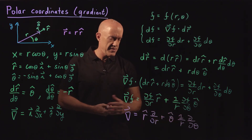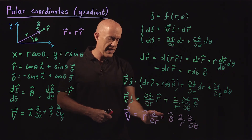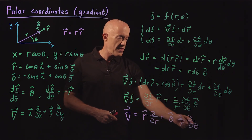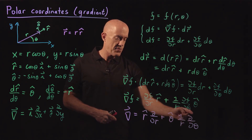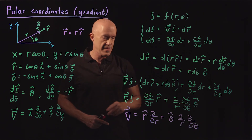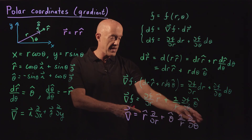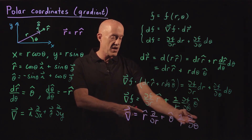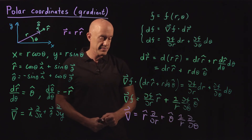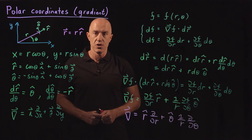I write it in this particular way, with r-hat and theta-hat placed in front, because the d/dθ operator acting on r-hat or theta-hat does not give zero — they depend on theta. So I need the d/dθ to be to the right of theta-hat. That's the gradient in polar coordinates. The tricky thing is that there's an extra factor of 1/r.